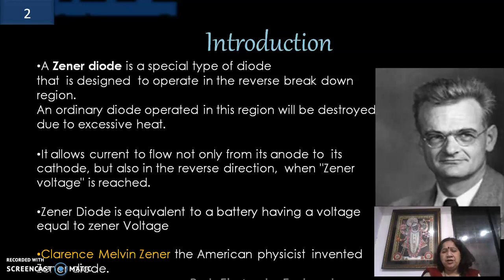An ordinary diode cannot be operated in this region — it will be destroyed due to excessive heat. A zener diode allows current to flow not only from its anode to cathode, but also in the reverse direction when the zener voltage is reached. We can consider a zener diode equivalent to a battery having a voltage equal to the zener voltage, so it is always used in applications where a constant output voltage is needed.